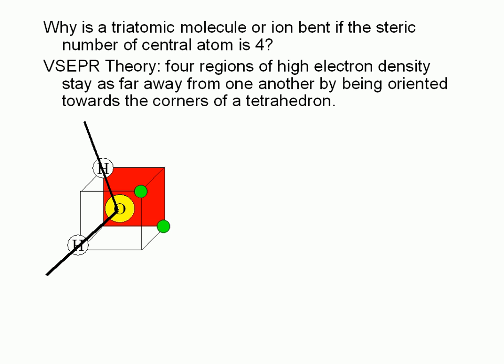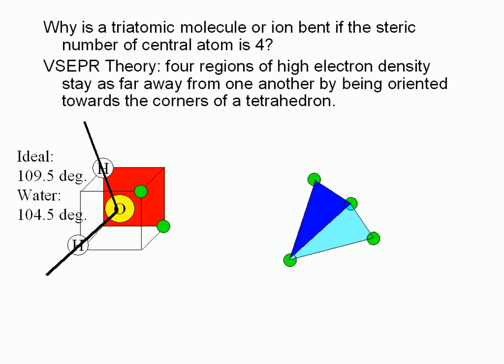In the case of water, two groups are single bonds and the other two are lone pairs. The lone pairs exert a stronger repulsion on neighboring groups than the single bonds. As a result, the H-O-H angle in water is 104.5 degrees. Tetra is Greek for the number four, and hedron is Greek for sides — a tetrahedron is a four-sided figure, and it is a perfectly symmetrical pyramid with four equilateral triangle faces.